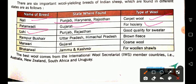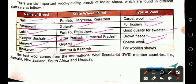Next is Lohi, found in Punjab and Rajasthan — good quality sweaters are made from this breed. Next is Rampur Bushair, found in Uttar Pradesh and Himachal Pradesh — brown fleece is obtained from this breed, which is used to make different types of fibers and fabric. Next is Marwari, found in Gujarat — very thick and strong wool is obtained from it.